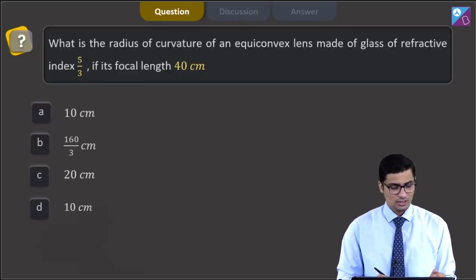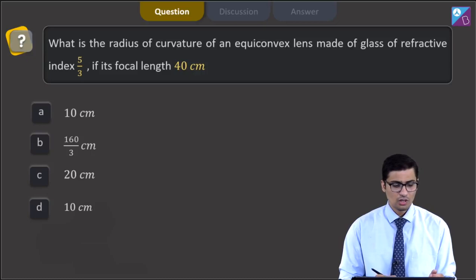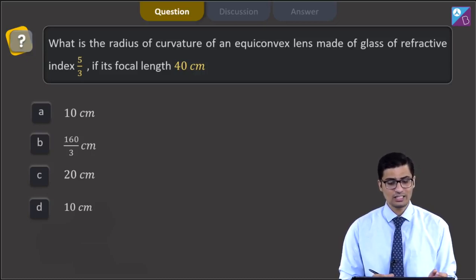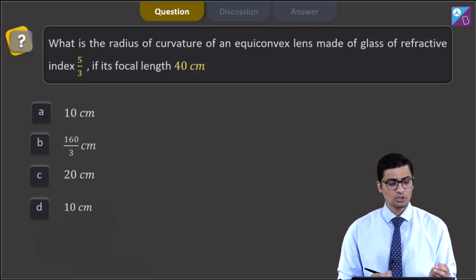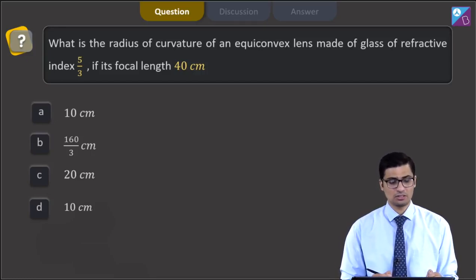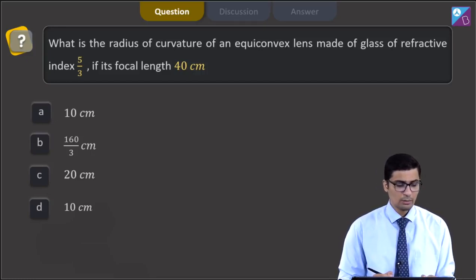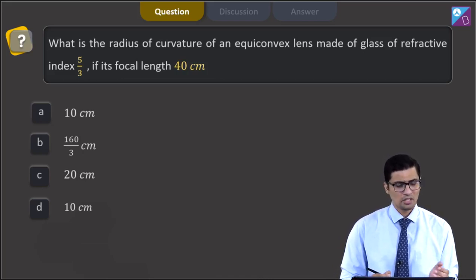This is question 46. The question states, what is the radius of curvature of an equi-convex lens made of glass of refractive index 5 by 3 if its focal length is 40 cm? And the options are 10 cm, 160 by 3 cm, 20 cm or 10 cm.